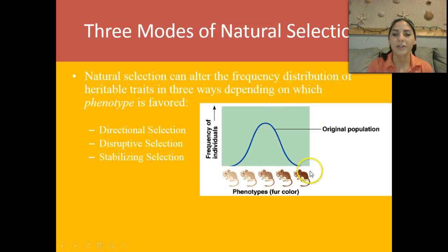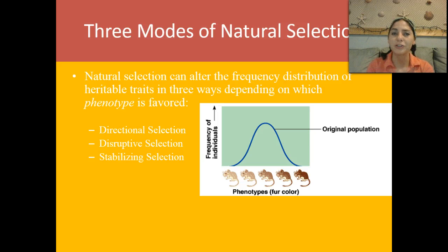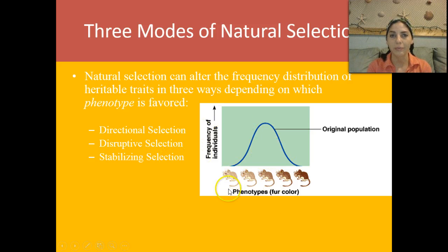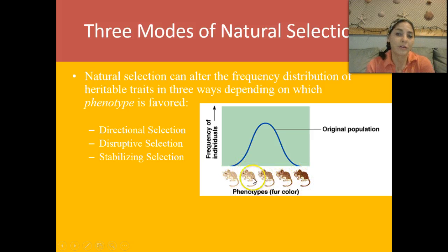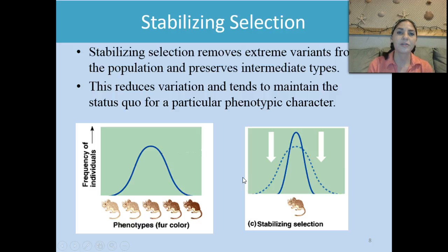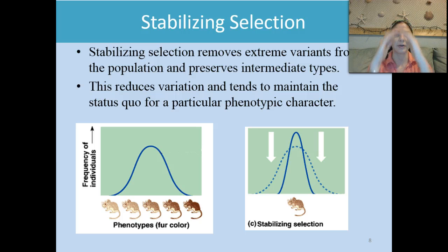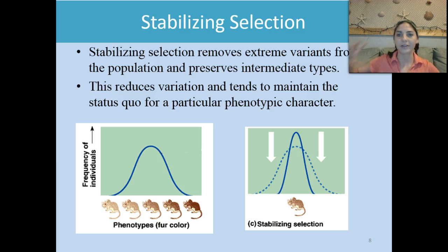Looking at our original population, these are the phenotypes of fur color in mice — you could also use baby birth weights or finch beak types. We have light mice and really dark mice, with a preference in the middle. Stabilizing selection is exactly what it sounds like — it stabilizes things in the middle. It removes the extreme variants: the very light mice and the very dark mice, and we wind up with medium brown mice.